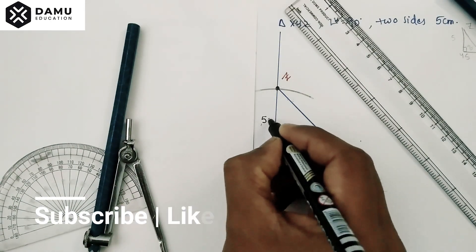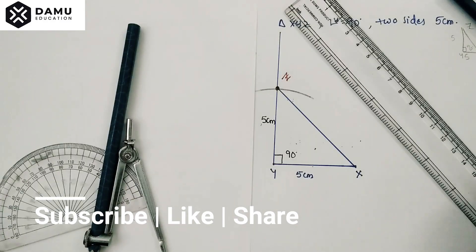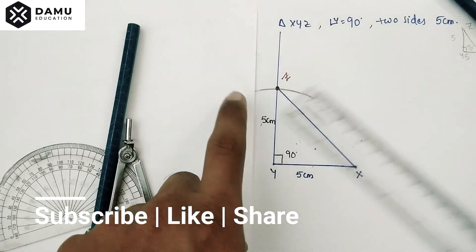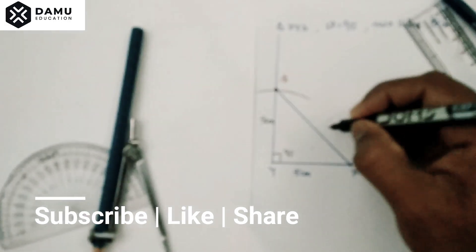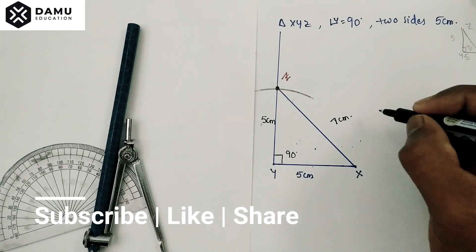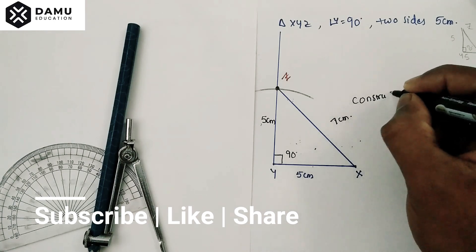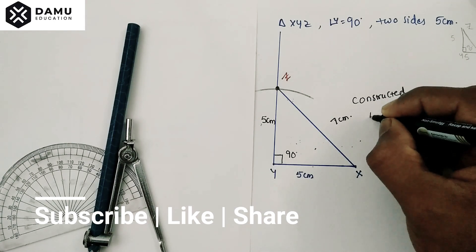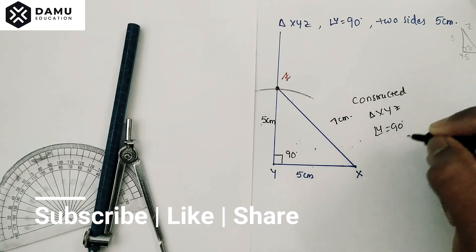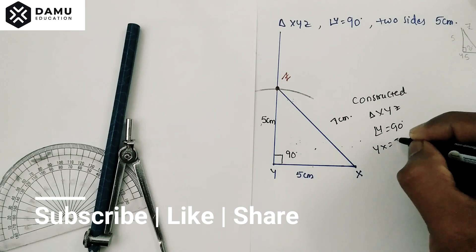This measurement is 5 centimeters. The remaining measurement XZ is 7 centimeters. We have constructed triangle XYZ with angle Y equal to 90 degrees and YX equal to 5 centimeters.